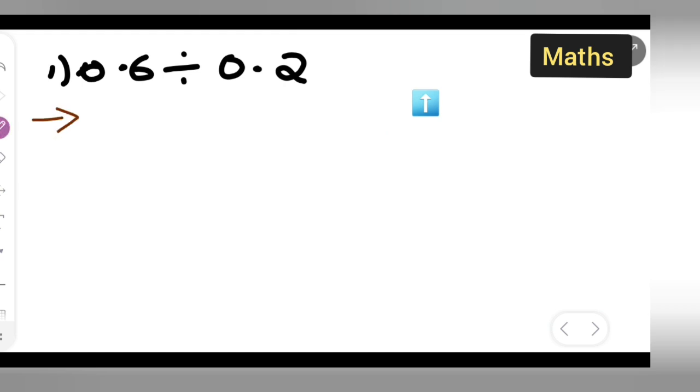First, let's write this step by step. 0.6 divided by 0.2. Next step, what you're going to write is equal to - now let's remove the decimal point. You will write 6 upon 10 divided by 2 upon 10, because the decimal point is in the first place itself, that's why it is 10. Here also it is 10.